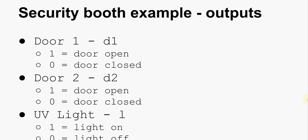Step number two, the outputs. Door one and door two. These will be actuators that will open somehow. Whether it's a motorized arm or whether it's just a lock that can allow you to pull it open yourself. And I've named them D1 and D2. One being open and zero being closed. And the UV light is also an actuator, an output. I've labeled it L. With one having the light on and zero having the light off.